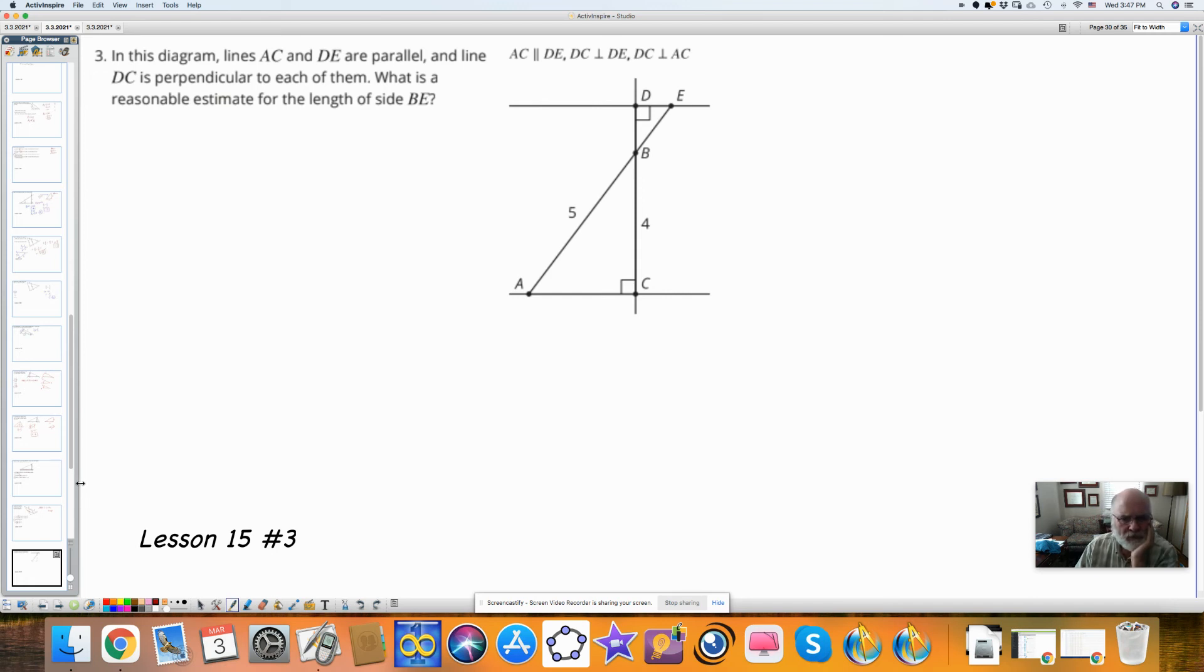In this diagram, lines AC, this one, and DE are parallel. That's convenient. Here I have one angle. Here I have a second angle. This means that these two triangles are similar. DC is perpendicular to each of them. What is the reasonable estimate for the side of BE?